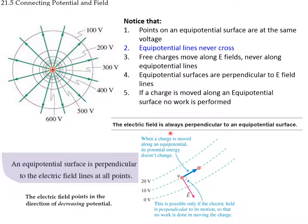The electric field is always perpendicular to equipotential surfaces. At any point the field could point two perpendicular directions — but a charge moving by itself goes from higher potential to lower potential, so the field points downward toward lower values. The field always goes from high to low potential, at 90 degrees to the equipotential surface. An equipotential surface is perpendicular to the electric field lines at all points, and the electric field points in the direction of decreasing potential.